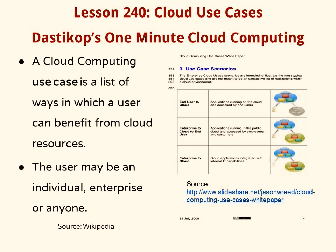The list of possible uses of cloud computing is called use cases. A cloud computing use case is a list of ways in which a user can benefit from cloud resources. The user may be an individual, enterprise, or anyone. On the right side you can see there are end users like us who will be using things like Gmail, Google Docs, and other resources.